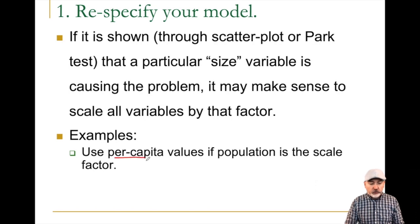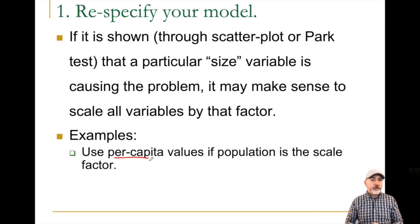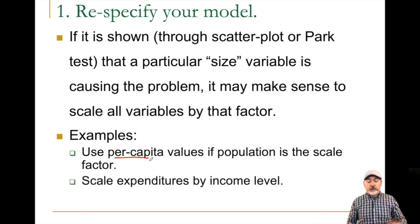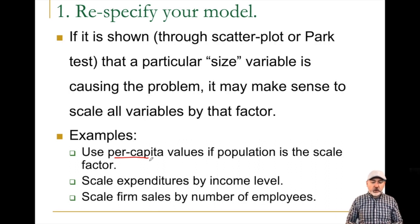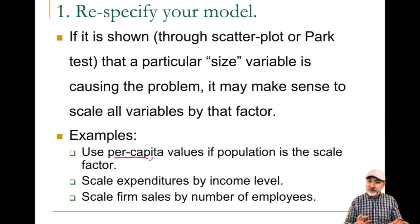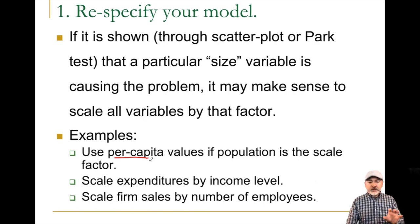Particularly, we're thinking about going from total values to per capita values. When we try to predict gross domestic product, countries with more output have more variability, so if we scale by population — measuring per capita GDP — that scale factor disappears. Similarly, instead of total household expenditures, think about spending as a proportion of income. And instead of predicting total output, predict output per worker.